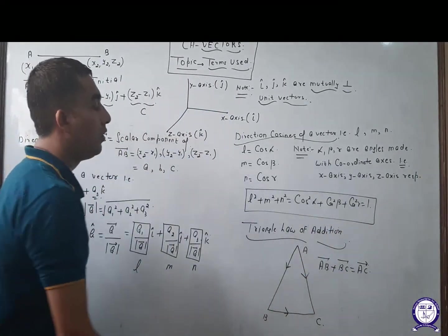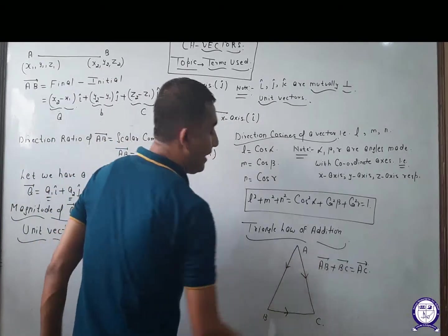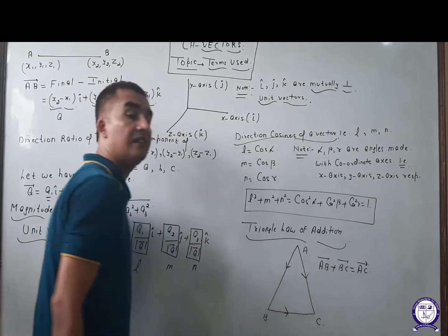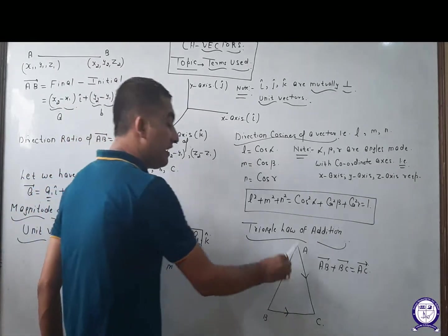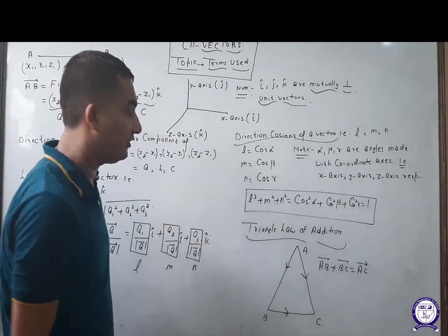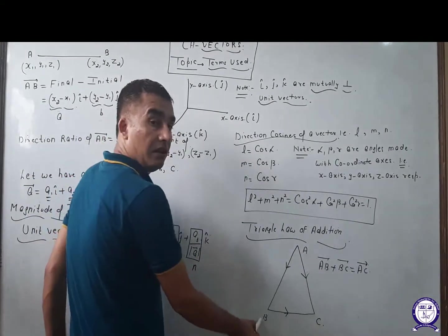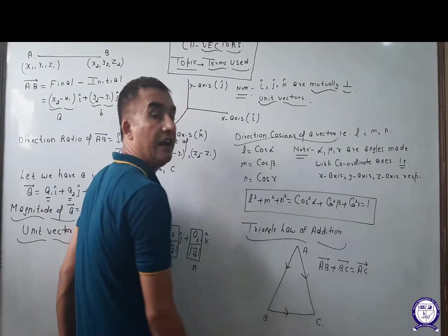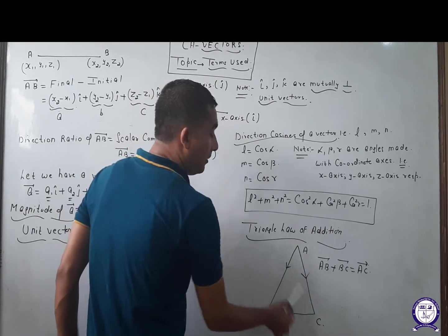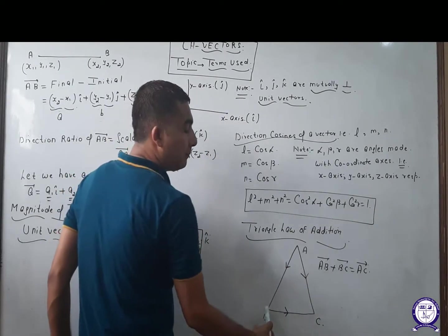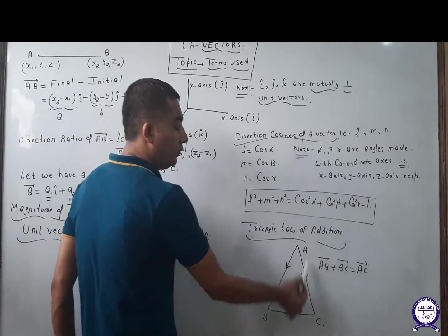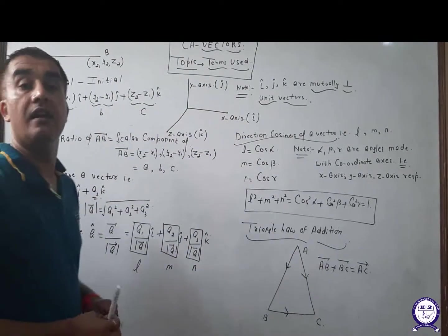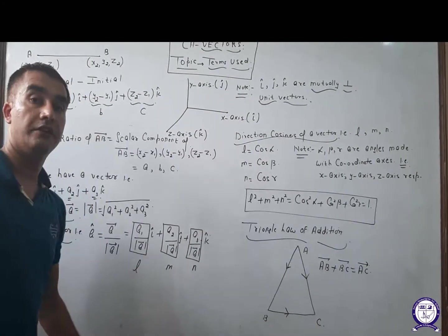Here is a law called the Triangle Law of Vector Addition. In any triangle, three sides are there, and two sides will be in the same direction while the resultant will be in the opposite direction. Like AB vector following BC vector, but AC vector will be in the opposite direction — that is, the resultant: AB vector plus BC vector is equal to AC vector. These are the basic terms used in vectors.